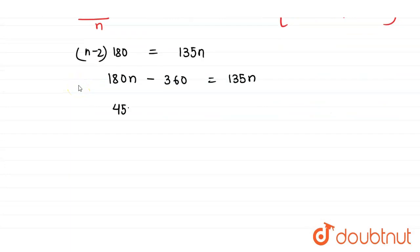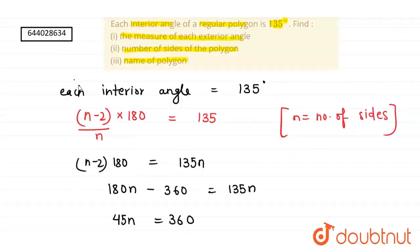Therefore the value of n is 8. So the value of n is 8. Now we have to find the measure of each exterior angle.